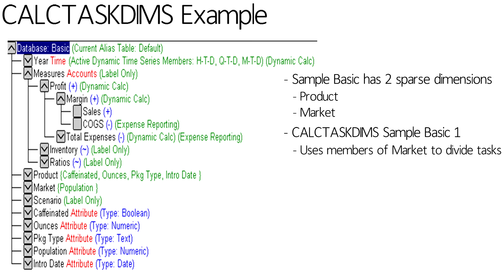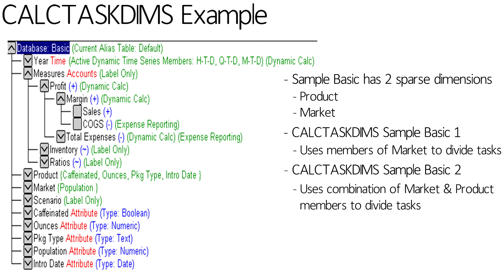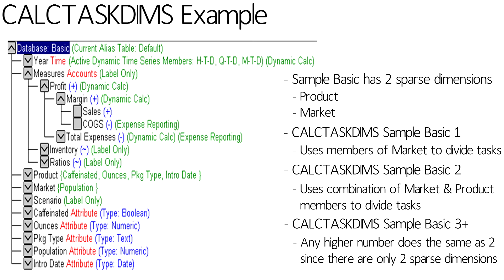The last sparse dimension in the outline is market, so it's going to parallelize by all the members of market. If I set CalcTaskDims to two, it's going to use the combination of all the members of the market dimension and the product dimension — so it's going to do Texas Cola while it does California UnCola while it does Oregon Fruit Soda. If I set CalcTaskDims to some number higher than two, it's actually smart enough to drop it back down to two, since it knows there are only two sparse dimensions.